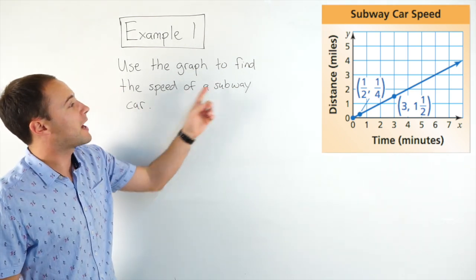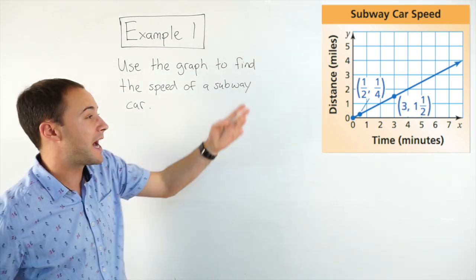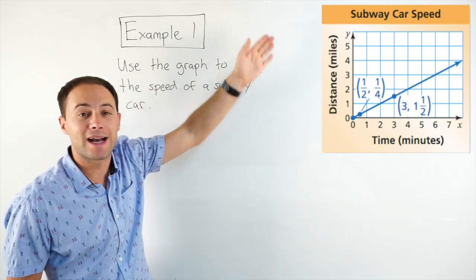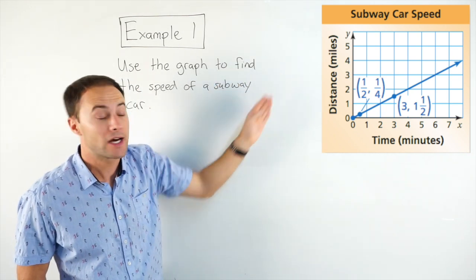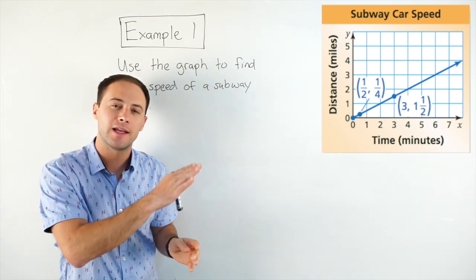Example one. Use the graph to find the speed of a subway car. So if we look at this graph, the title is Speed of a Subway Car. The y-axis is distance in miles. The x-axis is time in minutes. And if you look at that line, it's straight.